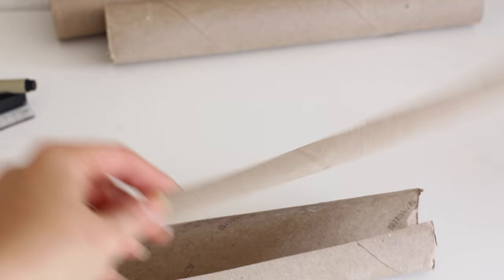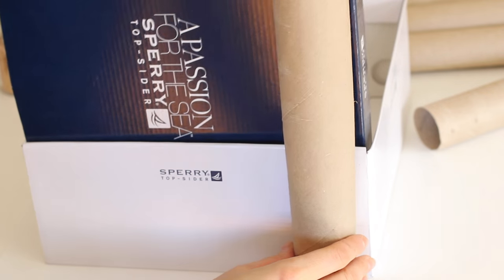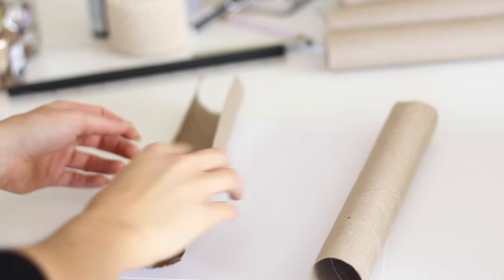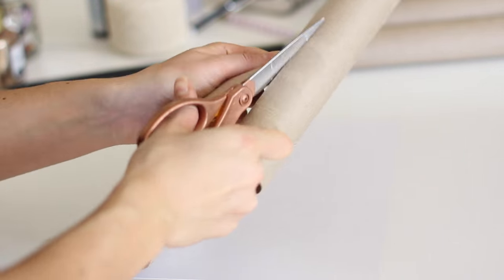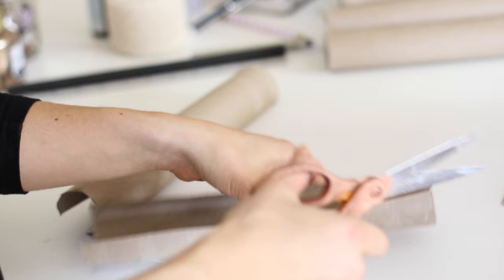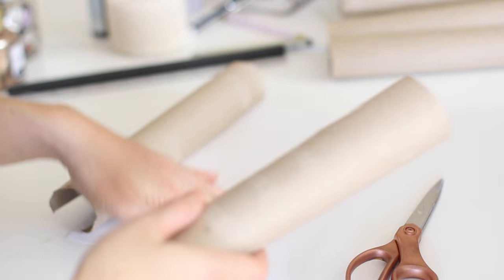You can do them all the same size but I decided to do them variegated that way it looked realistic, like I had different books on my shelf. So I just cut some of the paper towel roll off that way they laid a little bit flatter and weren't so round.